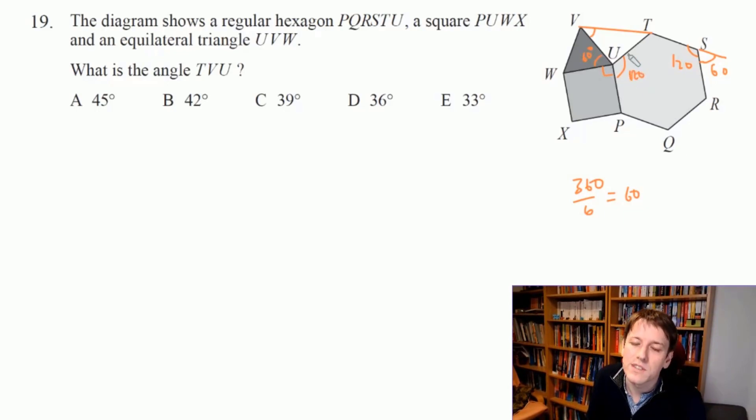And then angles on a straight line add up to 120. So the interior angle is 120. So this one's also 120. So that means that this angle in here, VUT is 360 minus 120 minus 60 minus 90, which is 90 degrees. And then you look at that and you think, right, that's why this question is not as bad as it looks, because this angle is actually a right angle, 90 degrees. And that means that this is a right angled triangle.